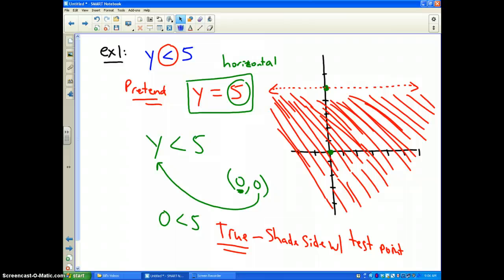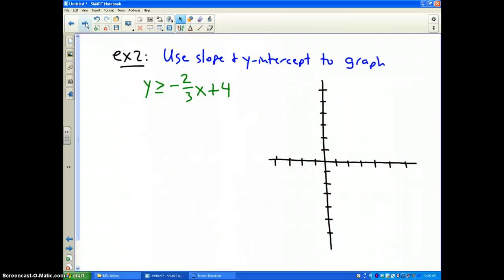Now, at this time, I will do one more problem for you. The last example in this video is to use the slope and y-intercept to graph y is greater than or equal to negative 2/3x plus 4.